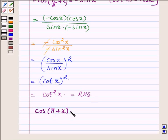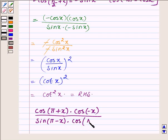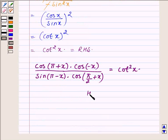cos(π + x) · cos(-x) / [sin(π - x) · cos(π/2 + x)] = cot²x. Hence proved.